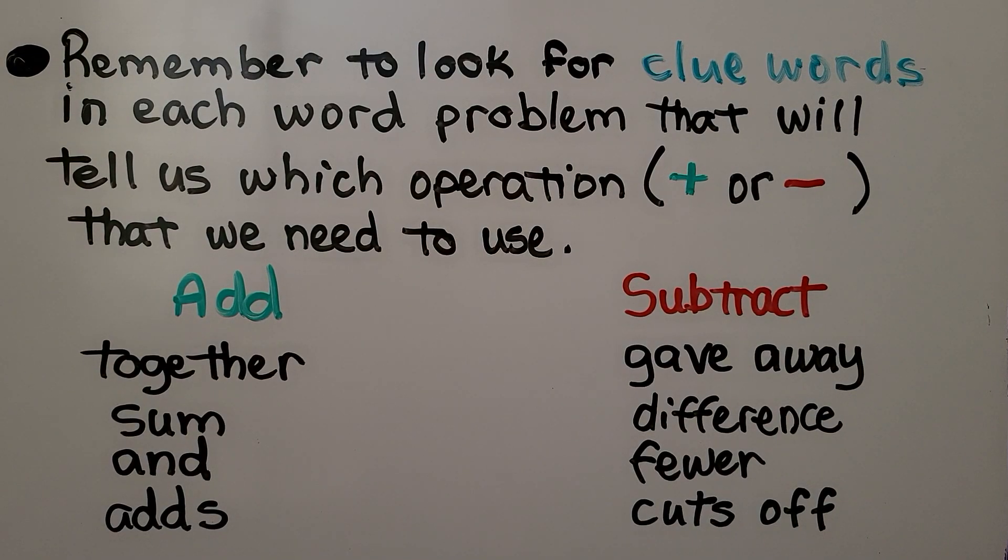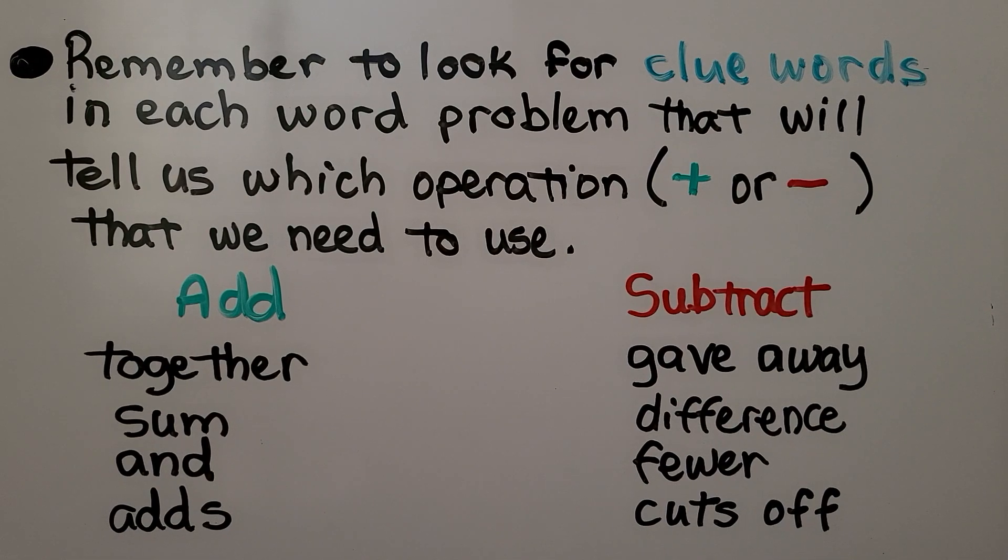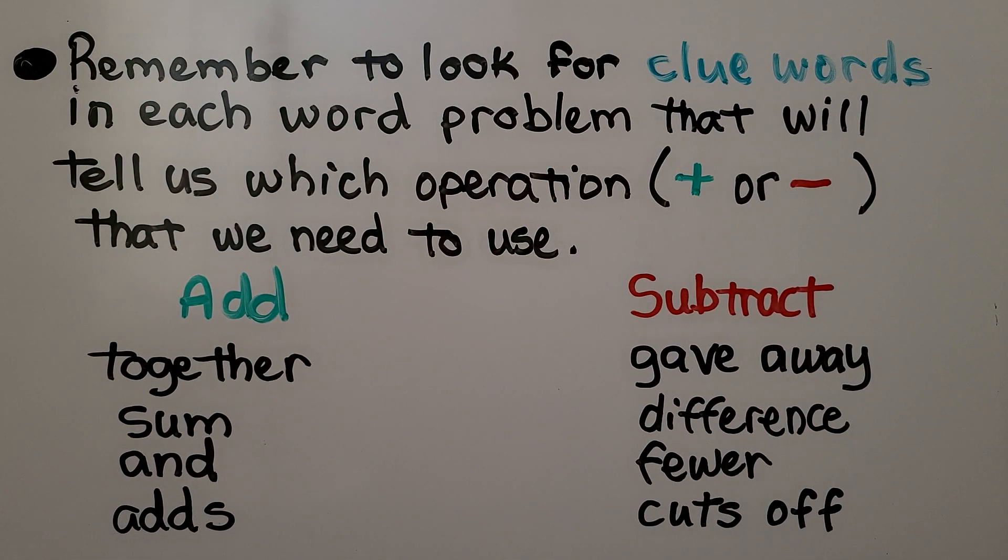Remember to look for clue words in each word problem that will tell us which operation, add or subtract, that we need to use. So to add, there's clue words like together, sum, and, adds. For subtraction, there's clue words like gave away, difference, fewer, cuts off.